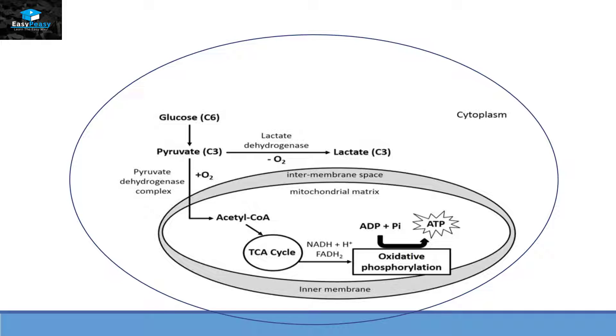Now this acetyl-CoA will enter the TCA cycle, also called Krebs cycle or citric acid cycle, through which it will enter the oxidative phosphorylation stage and will ultimately generate ATP. Under anaerobic conditions where oxygen is not present, pyruvate with the help of lactate dehydrogenase will convert itself into lactate.